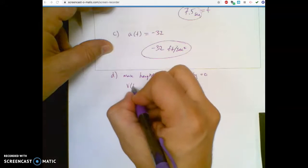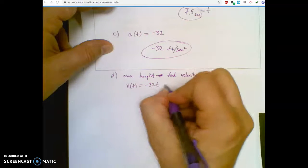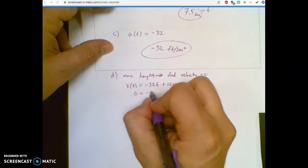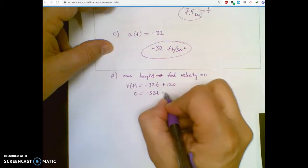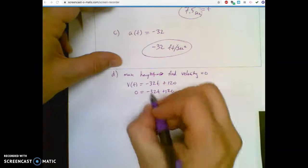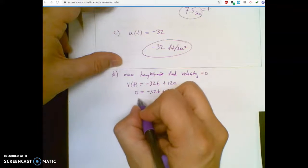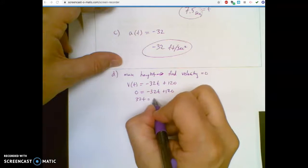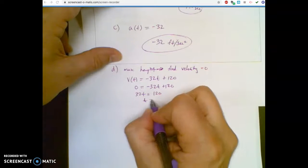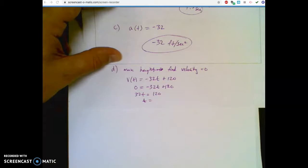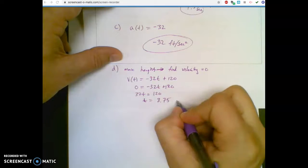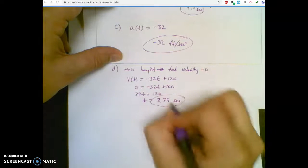So I just take my V of T formula, which was negative 32T plus 120, and I set it equal to zero, because I want to find the very peak is when its velocity is zero before it turns to negative velocity and starts coming back down to earth. So I'm going to take the 32 over here, T over here. So I like positives. I'll divide both sides by 32. So whatever 120 divided by 32 is 3.75 seconds. That is when it hits its highest height.